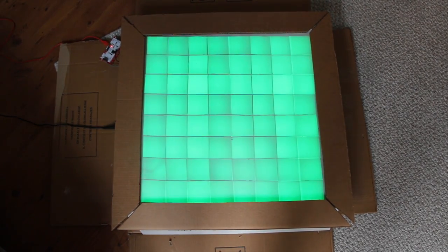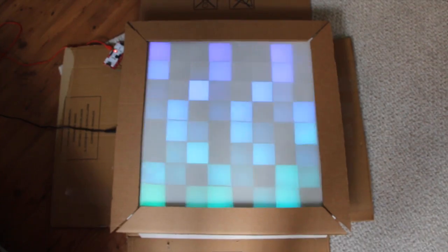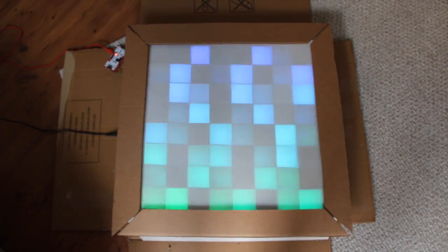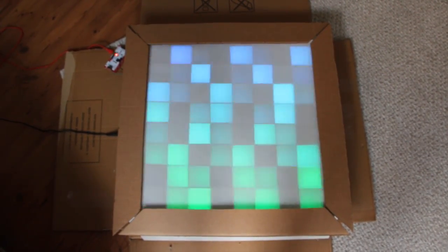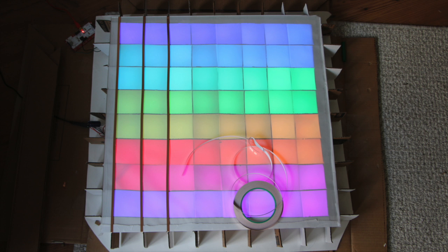We're going to start laying copper tape on the surface of the glass. It's helpful to have the LEDs turned on so that we can align the tape with the cardboard. We're going to lay the columns first.